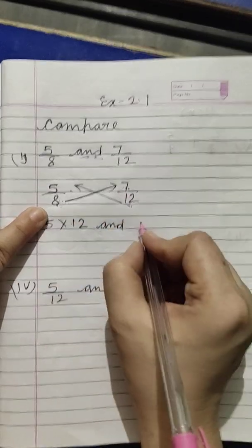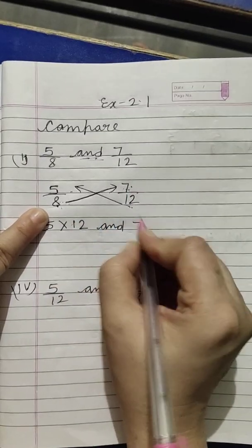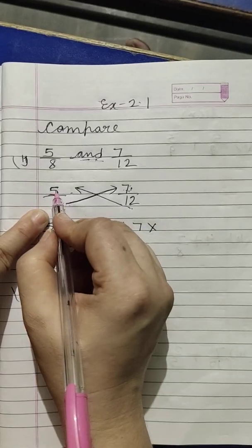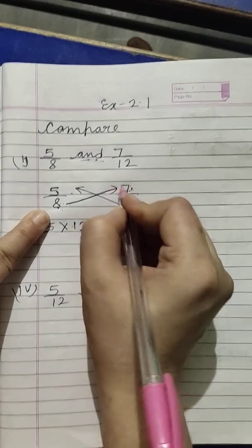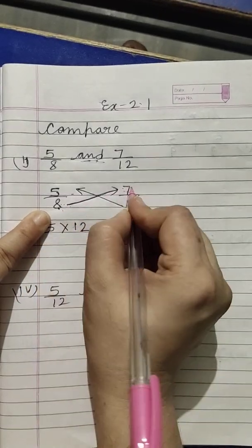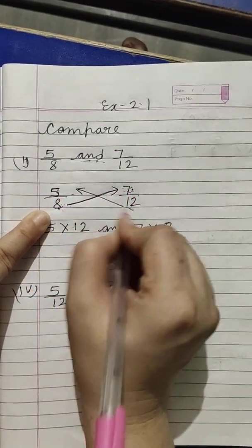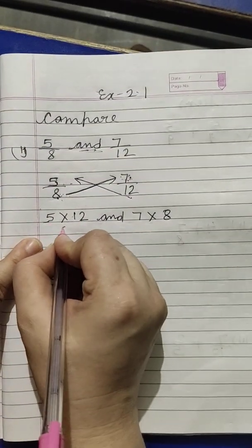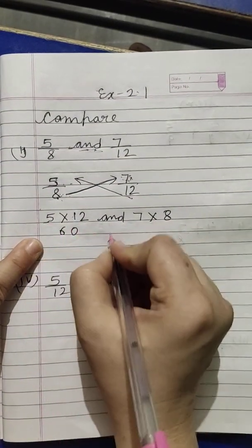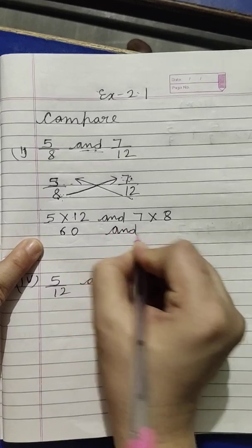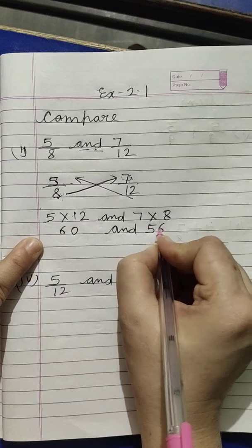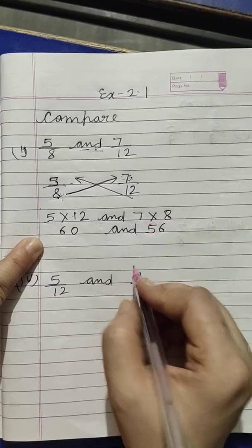Now 7. We will write the first one, the upper digit. We will write the numerator. The numerator is first. We will always remember that we will write the numerator first. We will write the denominator below. The denominator is 8. So we will multiply the denominator from 7. We have to multiply the cross multiplication. 12 times 5 is 60. And 7 times 8 is 56.